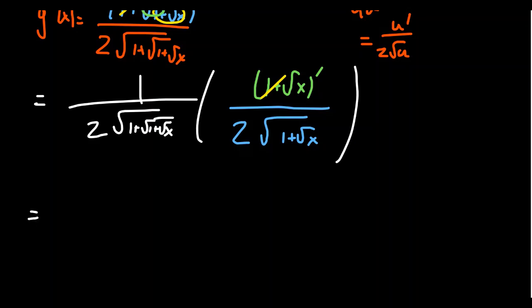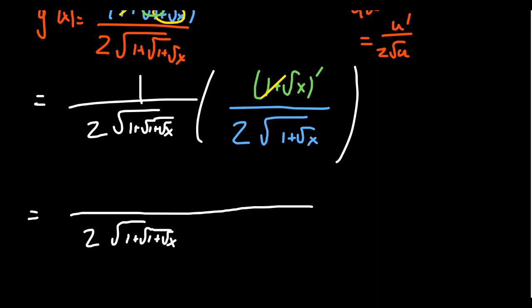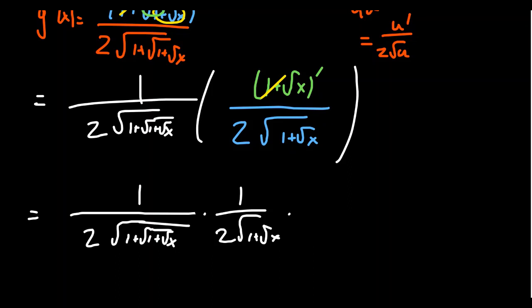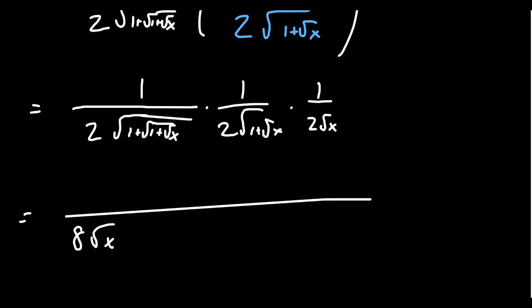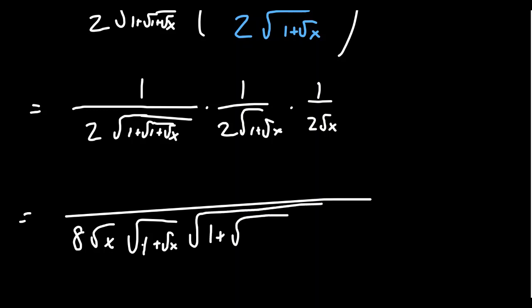Putting it all together: the first outer derivative gives 2√(1 + √(1 + √x)) in the denominator (with 1 on top), the middle derivative gives 1 over 2√(1 + √x), and the inner derivative gives 1 over 2√x. Multiplying the denominators: 2 × 2 × 2 = 8. So the final derivative is 1 over 8√x · √(1 + √x) · √(1 + √(1 + √x)), and that is the derivative of the function.